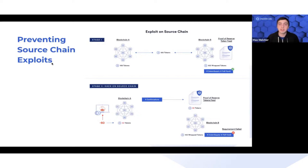Ideally, in a perfect world — as you can see in stage one — we have 100 tokens locked up on a source chain, Blockchain A, and 100 synthetic or wrapped tokens minted on Blockchain B.